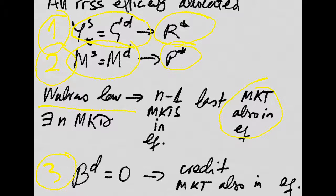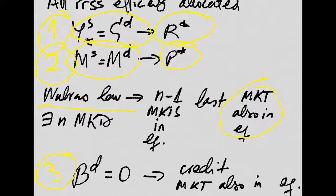So we have three markets in equilibrium, and the aggregate consistency conditions are met simultaneously.